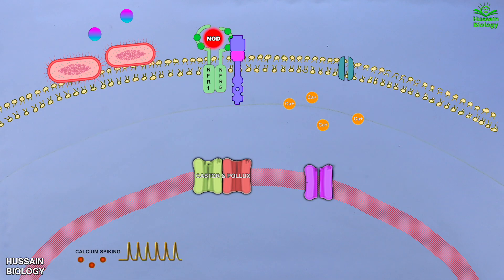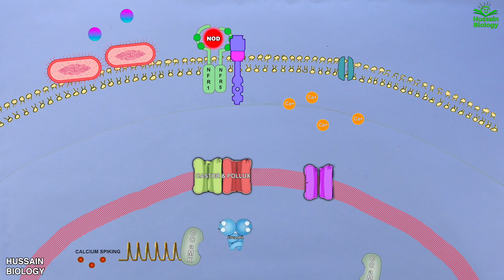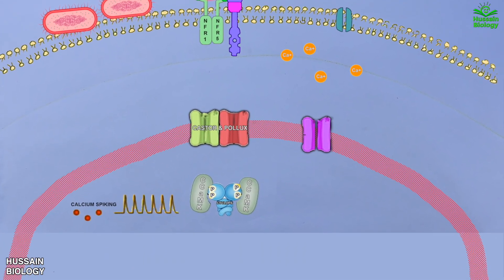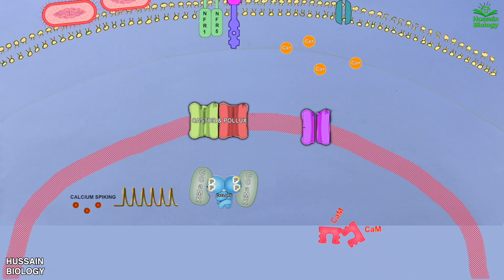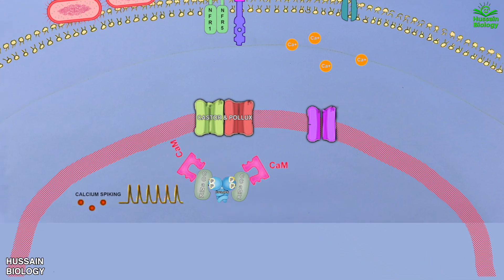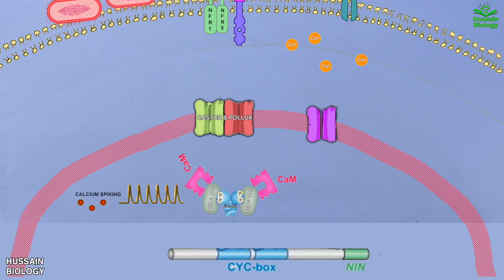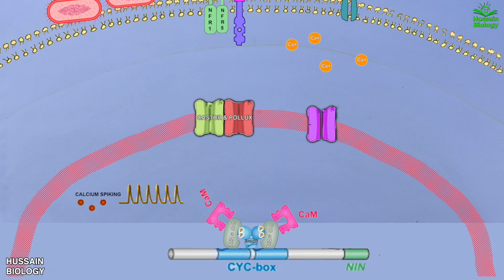This calcium spiking is decoded by CCAMK protein, which further mediates the signaling. The activated CCAMK first binds and phosphorylates CYCLOPS, and then CAM also binds to CYCLOPS. This activated complex of CYCLOPS, CAM, and CCAMK is now the transcription regulatory molecule. CYCLOPS then gets to the DNA and binds the CYC box.